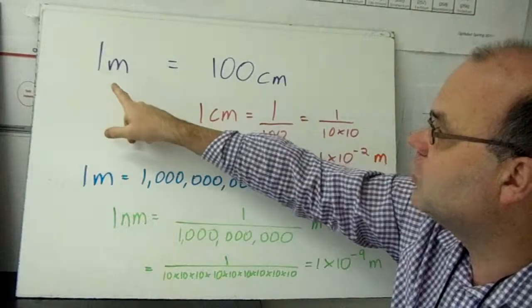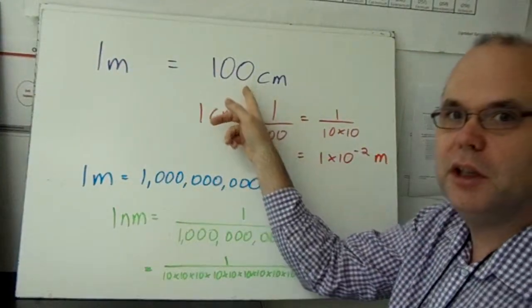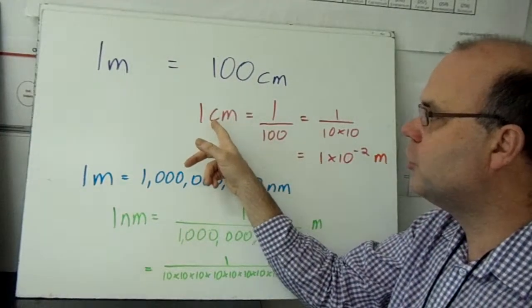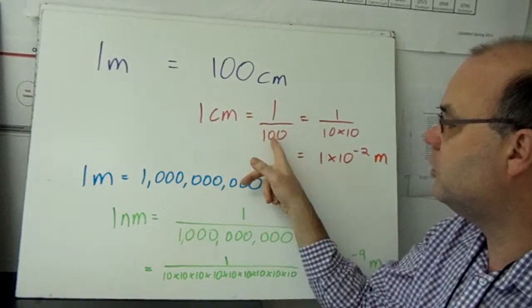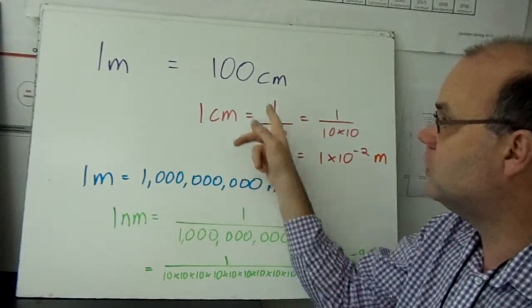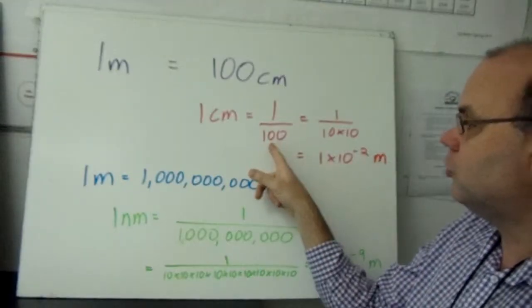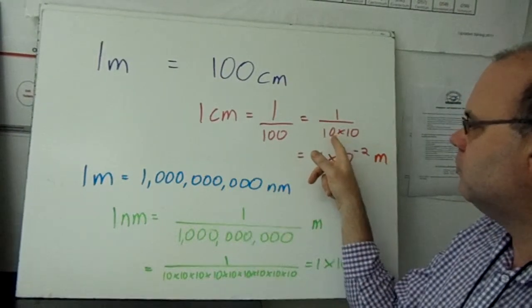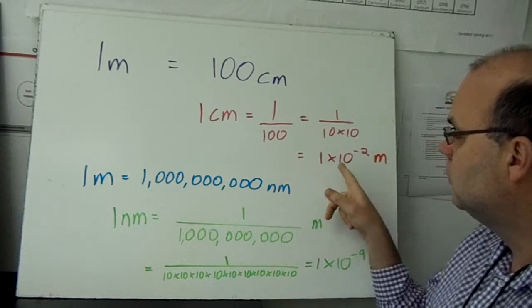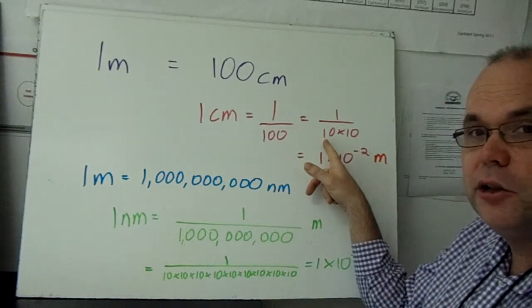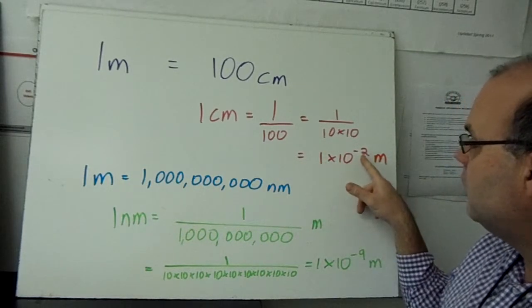Because light waves are so small that we often measure the wavelength in nanometers, which are much smaller, and we have to change those to meters or else the math doesn't work. So here's a simple conversion. One meter, like a meter stick, has 100 centimeters in it. So if we wanted to express one centimeter in meters, we'd say it's one meter divided by 100, which is the same as 1 divided by 10 times 10. This might remind you of scientific notation.